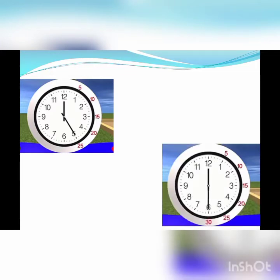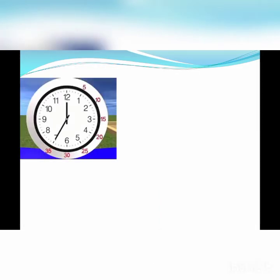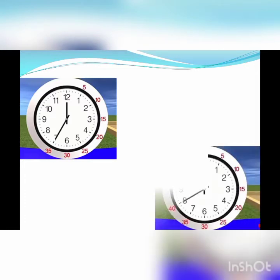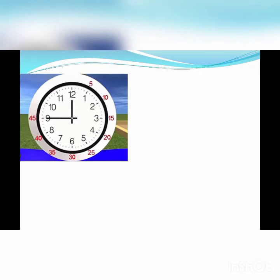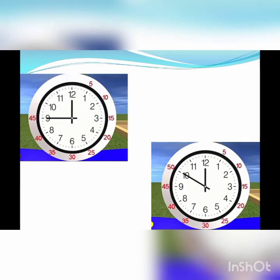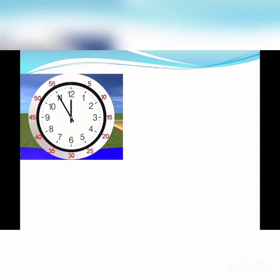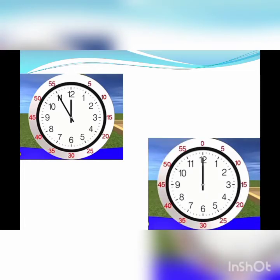Similarly, for 6, it is 5 sixes are 30 — 30 minutes past. For 7, it is 5 sevens are 35 — 35 minutes past. For 8, it is 5 eights are 40 — 40 minutes past. Similarly, for 9, it is 5 nines are 45 — 45 minutes past. For 10, it is 5 tens are 50 — 50 minutes past. For 11, it is 5 elevens are 55 — 55 minutes past. And when the minute hand comes on 12, it is counted as 00 minutes. I hope now you are clear.